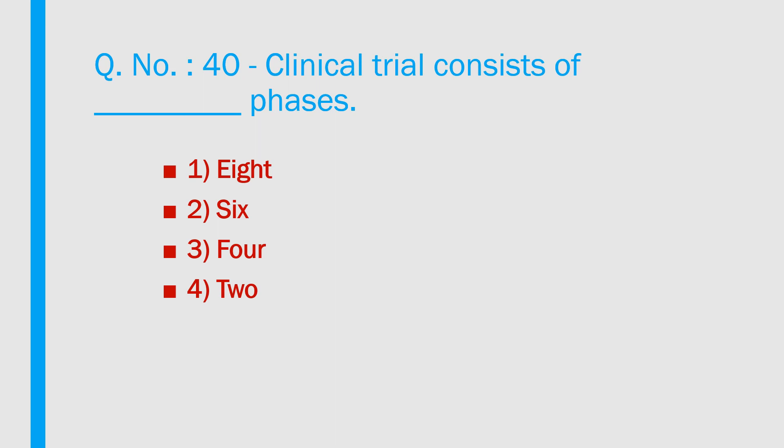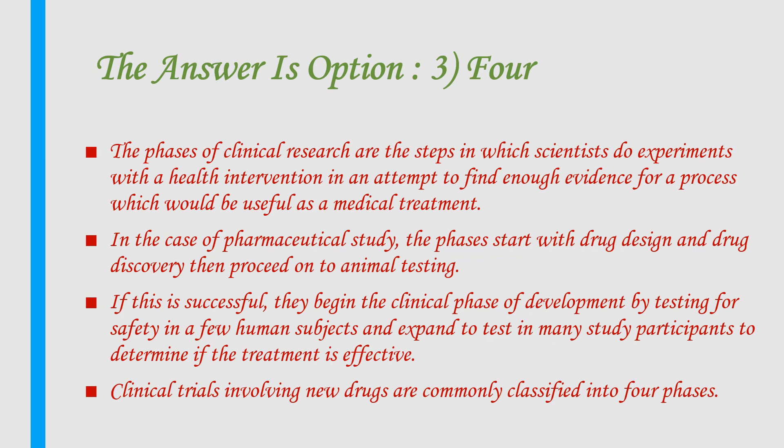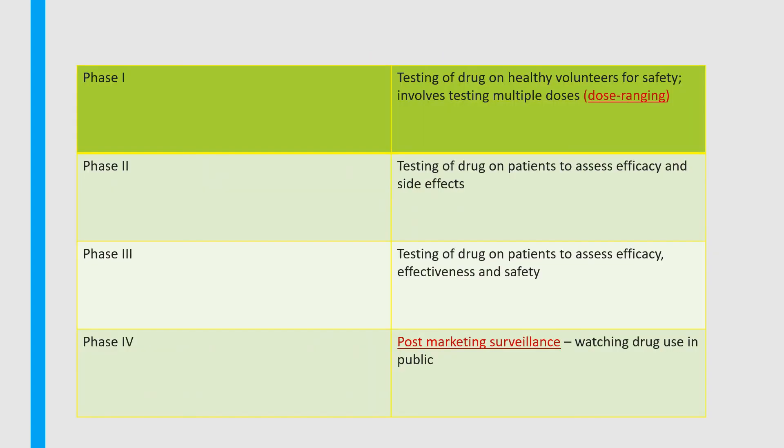Question number 40: Clinical trials consist of how many phases? Options: 8, 6, 4, or 2. Answer is option 3 — 4 phases. In pharmaceutical studies, phases start with drug discovery, then animal testing, then the clinical phase. Phase 1: testing of drug on healthy volunteers for safety, including dose ranging. Phase 2: testing on patients to assess efficacy and side effects. Phase 3: testing on patients to assess efficacy, effectiveness, and safety. Phase 4: post-marketing surveillance — monitoring the drug in the general public.